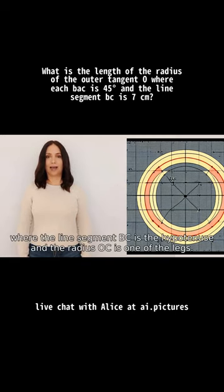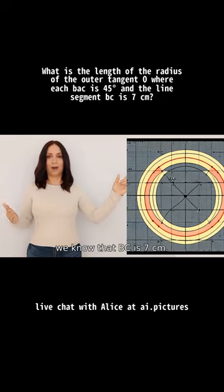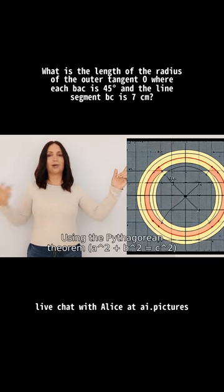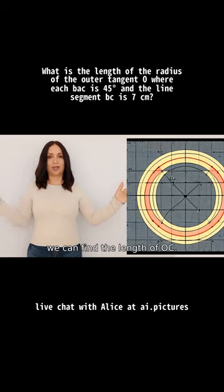From the given information, we know that BC is 7 cm. Using the Pythagorean theorem, a² + b² = c², we can find the length of OC.